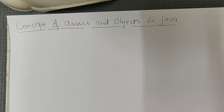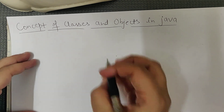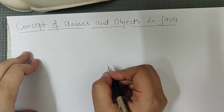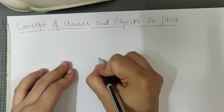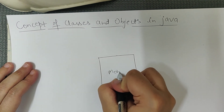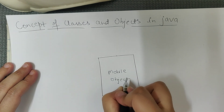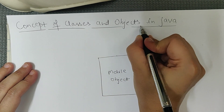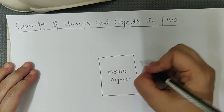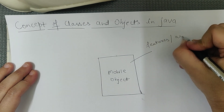Welcome to this Java programming tutorial. The next topic is the concept of classes and objects in Java. Let's understand with a real-world example. Objects are real-world entities, so let's take the example of a mobile phone. Mobile is a real-world entity — we call it an object. Now, a mobile has features, also called characteristics or attributes.